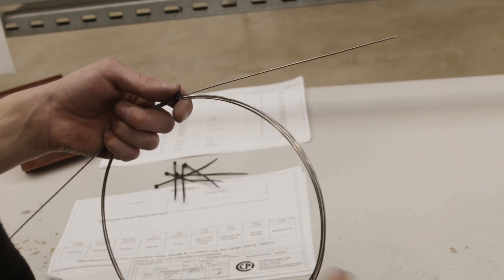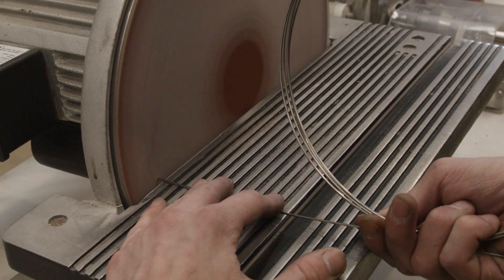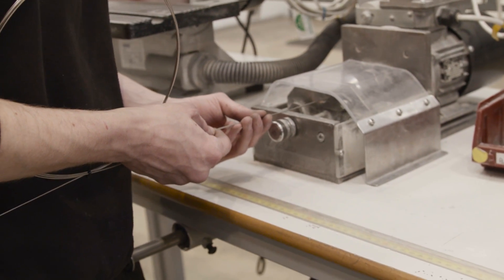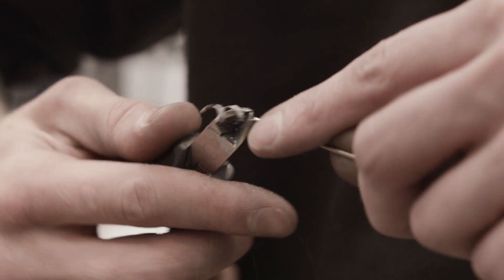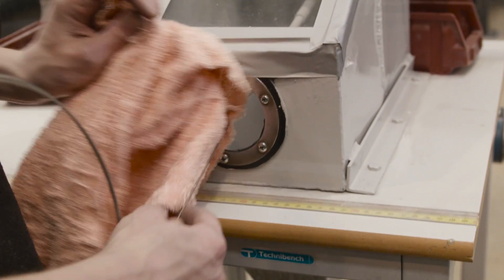The hot junction is then prepared. The cold end or connection end is created by stripping back the outer sheath and exposing the thermocouple conductors.